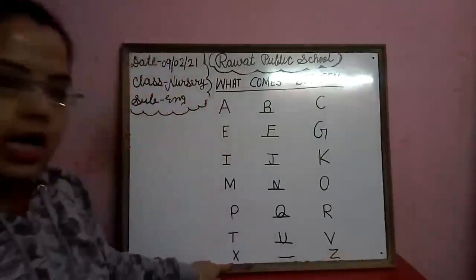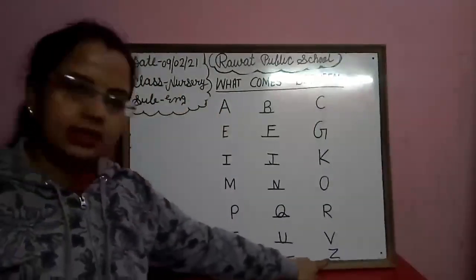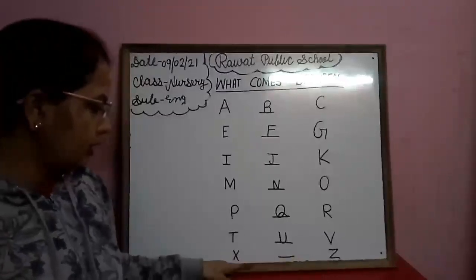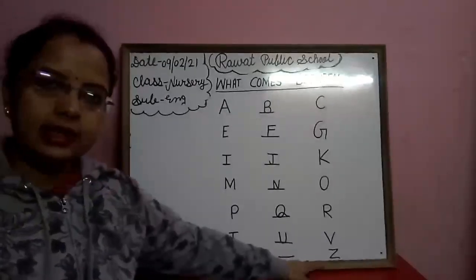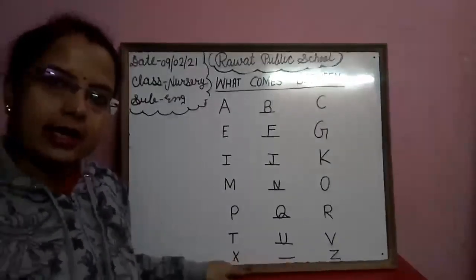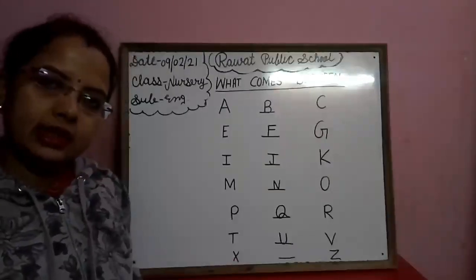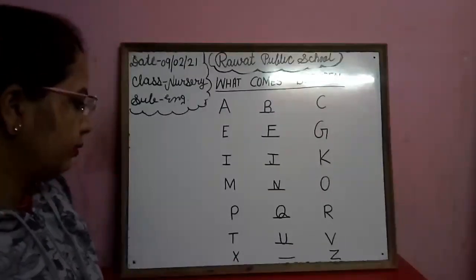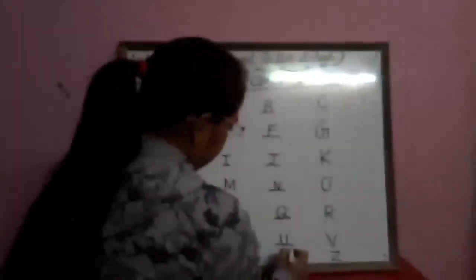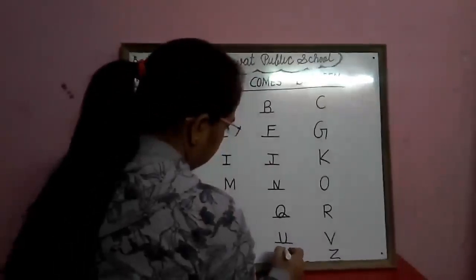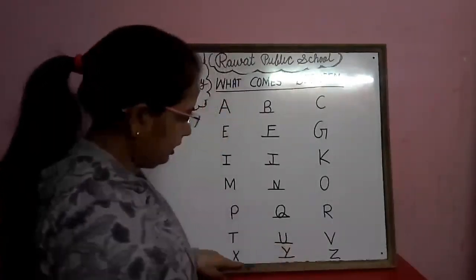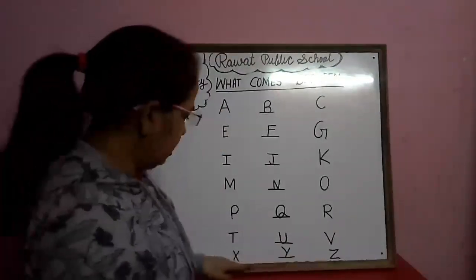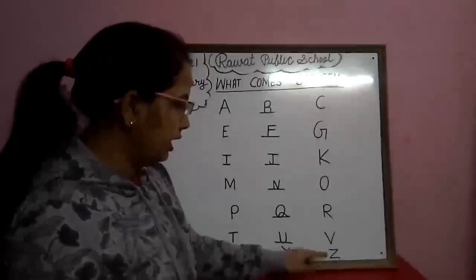This is X and this is Z. What comes between X and Z? X aur Z ke beech mein konsa letter aata hai? Y. So we will write here Y. X, Y, Z.